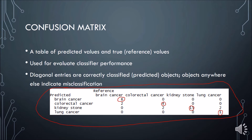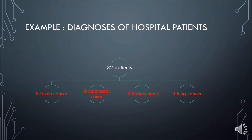The confusion matrix tells you how good your classifier is. In this example, suppose you have a group of 32 patients: eight of them actually have brain cancer, six of them actually have colorectal cancer, 15 of them actually have kidney stone, and three of them actually have lung cancer.